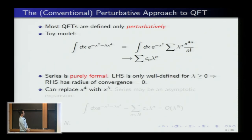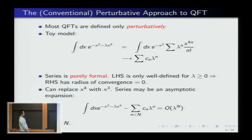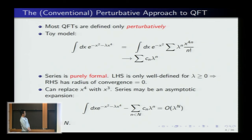The reason we might want to do this construction is that in favorable cases, it is known that the series you get is actually an asymptotic series for the underlying integral regarded as a function of λ. So the logic is: because of this fact in finite dimensions, the hope is that by doing perturbation theory for these ill-defined integrals, we hope that series might be some kind of asymptotic series for the path integral.